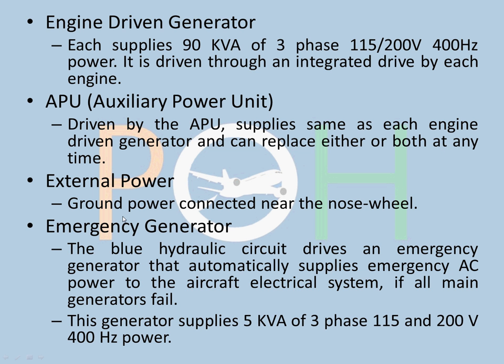External power, or ground power, is connected near the nose wheel. It is an external power source used basically when you're parked near the bay where you have a ground power connection.